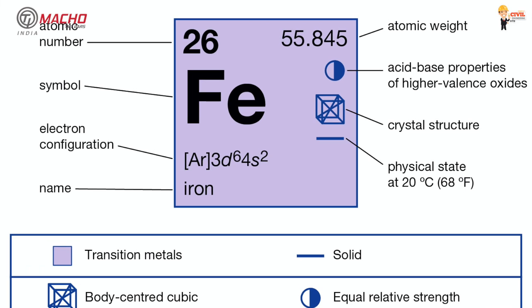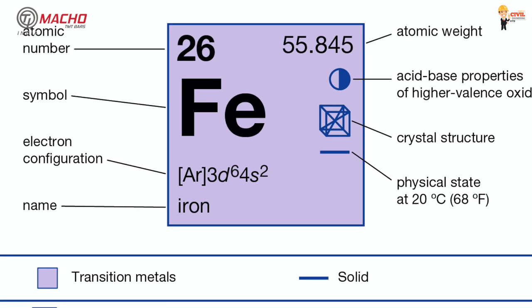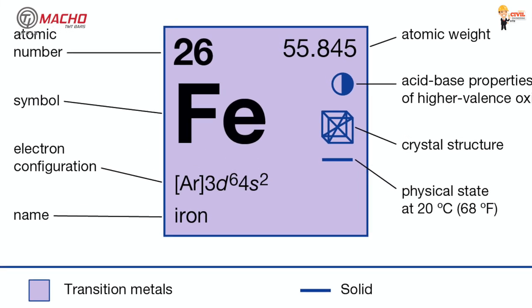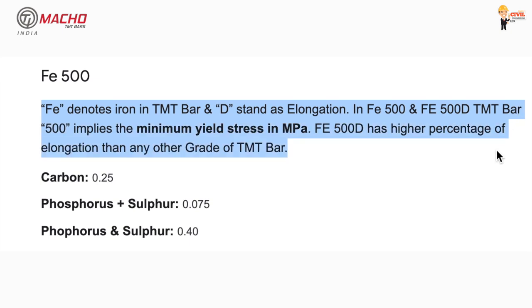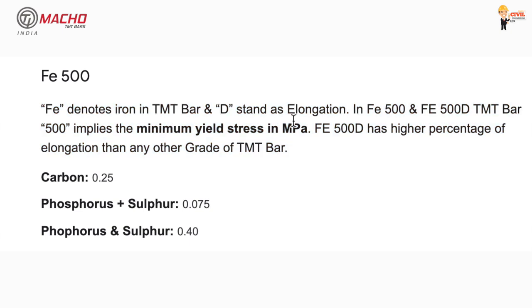Fe 500 and Fe 550 are different grades. Fe 500D is a recommended grade. The 'D' in Fe 500D stands for ductility, which means it is a very high-ductility bar.